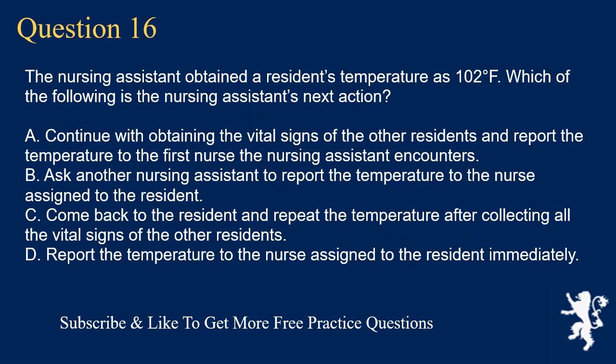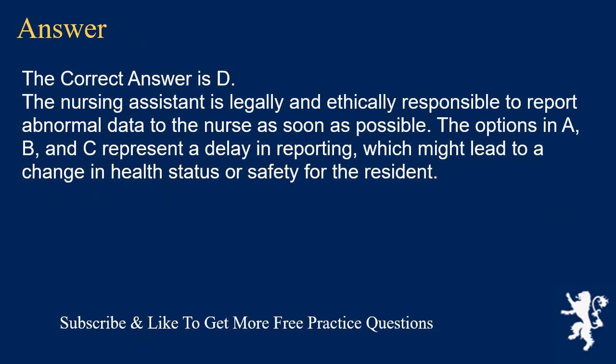Question 16. The nursing assistant obtained a resident's temperature of 102 degrees Fahrenheit. Which of the following is the nursing assistant's next action? A. Continue obtaining vital signs of other residents and report to the first nurse encountered. B. Ask another nursing assistant to report the temperature to the nurse. C. Come back and repeat the temperature after collecting all other vital signs. D. Report the temperature to the nurse assigned to the resident immediately. The correct answer is D. The nursing assistant is legally and ethically responsible to report abnormal data to the nurse as soon as possible. Options A, B, and C represent a delay in reporting, which might lead to a change in health status or safety for the resident.